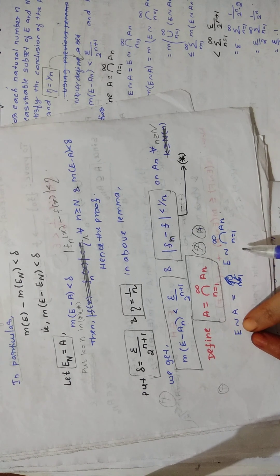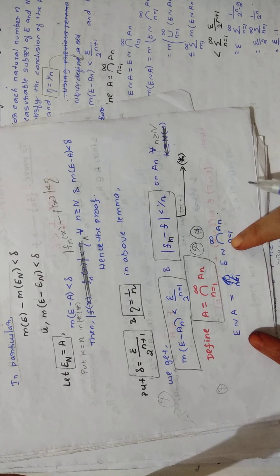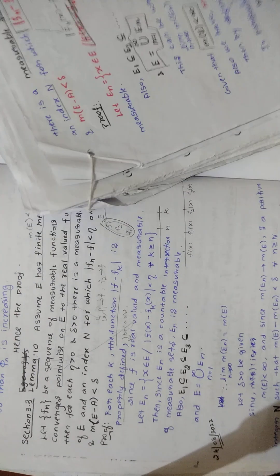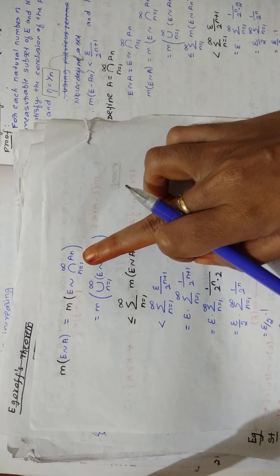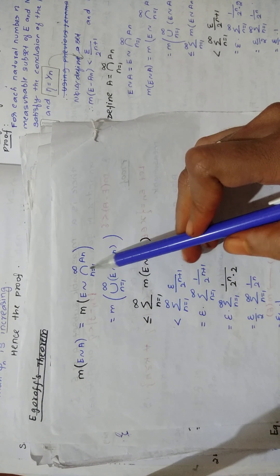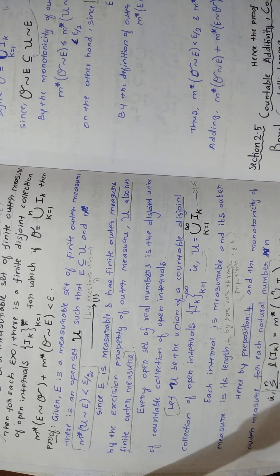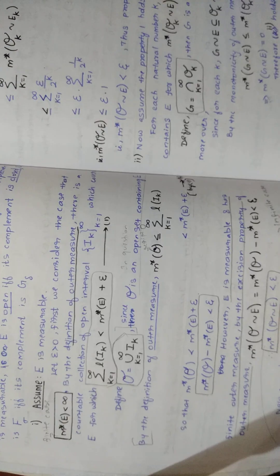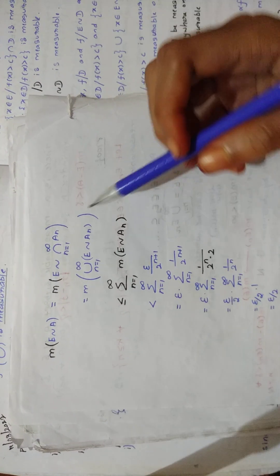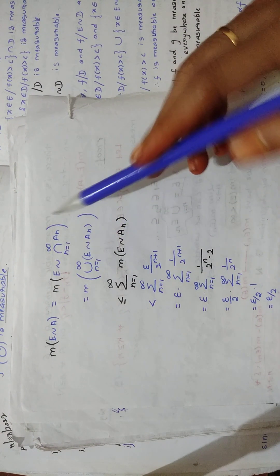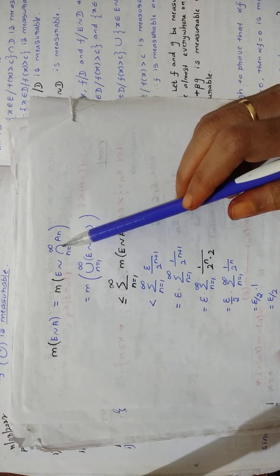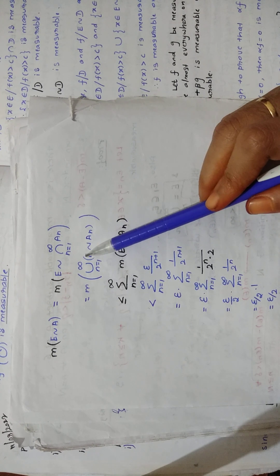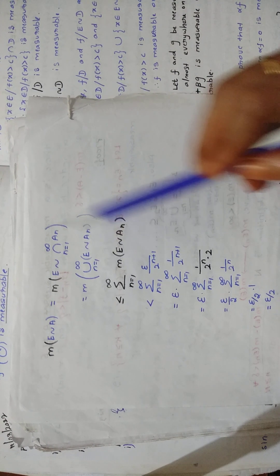By De Morgan's rule, the intersection comes to this side so that it becomes a union. Applying De Morgan's property: the intersection becomes union from n equal to 1 to infinity of E \ A_n. That is how E \ A changes.